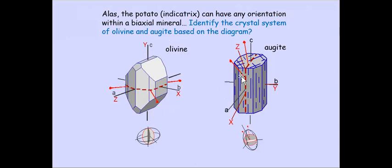For a monoclinic system, one axis — the y-axis — coincides with the b-axis, while the others make angles with the crystallographic axes. Clinopyroxene is an example of a monoclinic mineral. In triclinic minerals, none of the indicatrix vibration directions are parallel to any crystallographic axis.